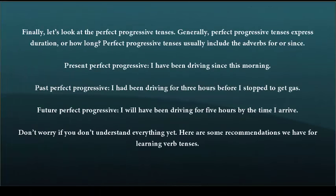Finally, let's look at the perfect progressive tenses. Generally, perfect progressive tenses express duration, or how long. Perfect progressive tenses usually include the adverbs for or since. Present perfect progressive: I have been driving since this morning. Past perfect progressive: I had been driving for three hours before I stopped to get gas. Future perfect progressive: I will have been driving for five hours by the time I arrive.